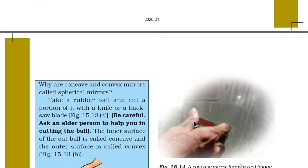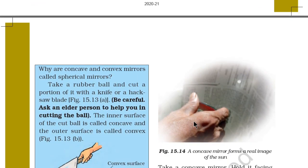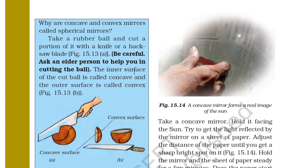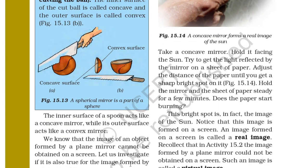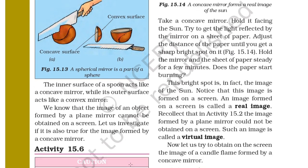Why are concave and convex mirrors called spherical mirrors? Take a rubber ball and cut a portion of it — the inner surface of the cut ball is concave and the outer surface is convex, as shown in figure B. A spherical mirror is a part of a sphere, which is why it is called a spherical mirror. The inner surface of a spoon acts like a concave mirror, while its outer surface acts like a convex mirror.